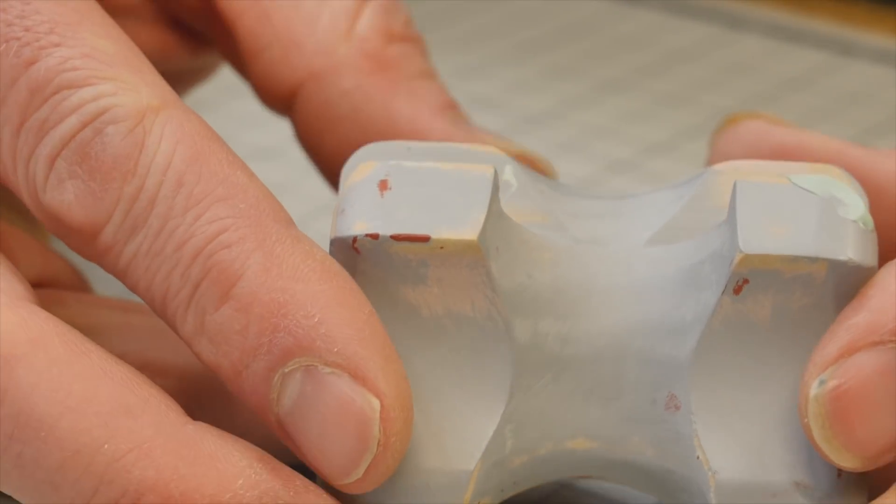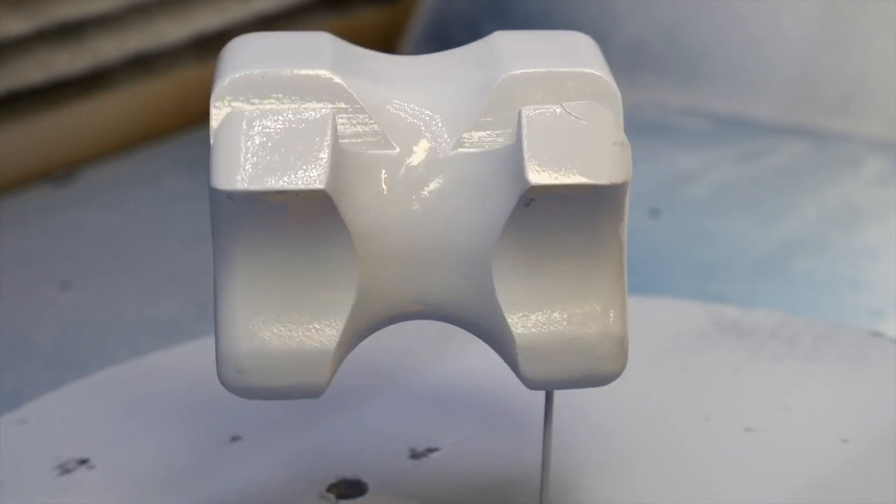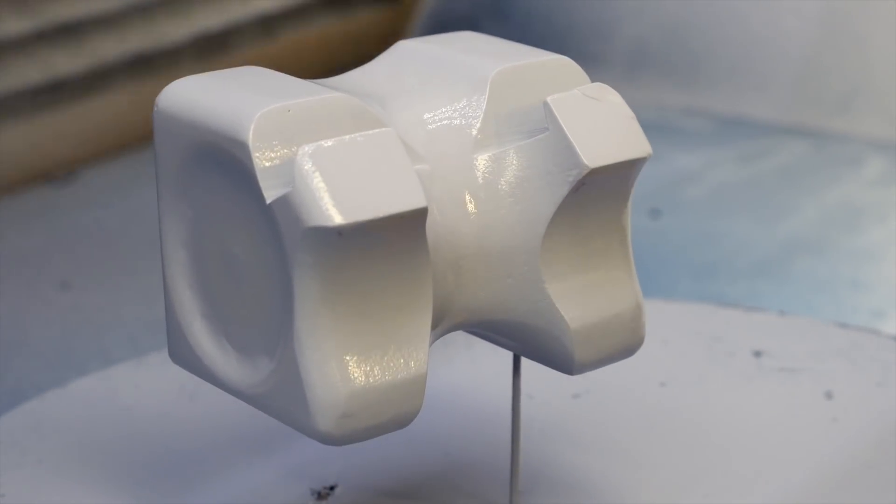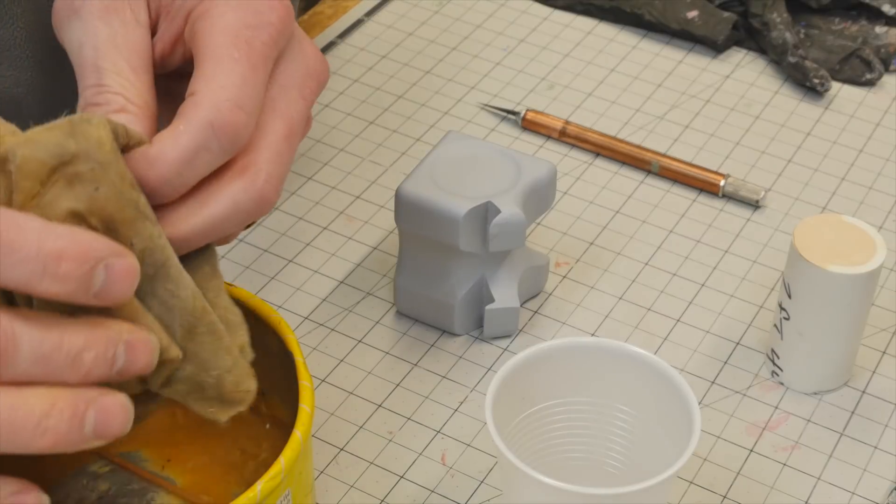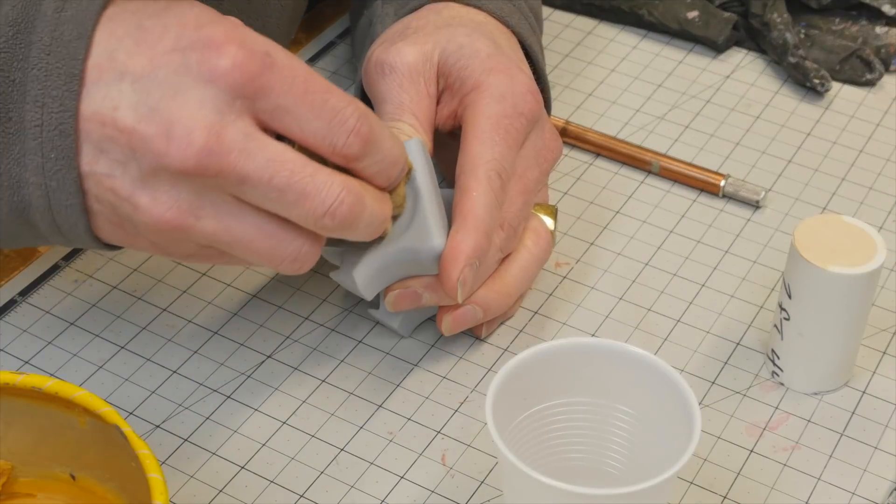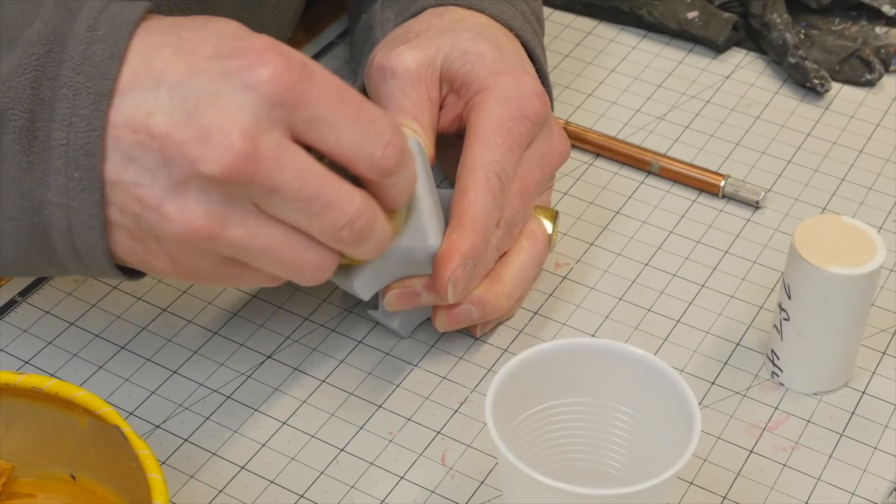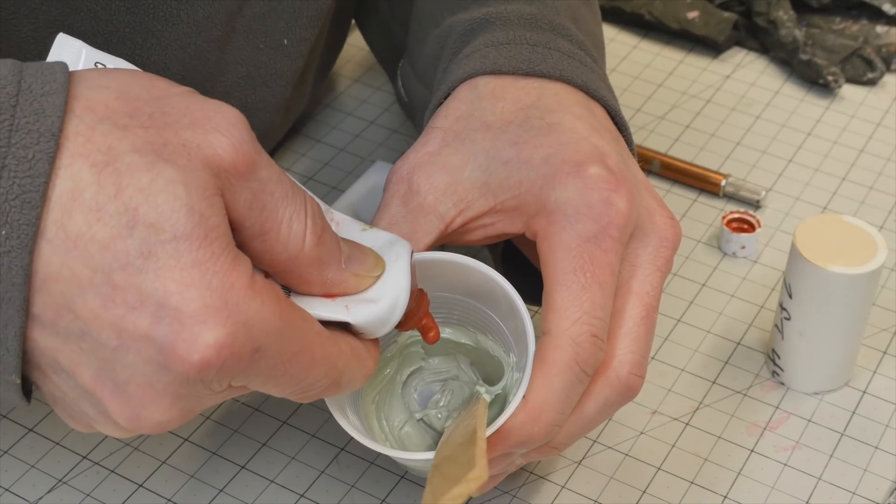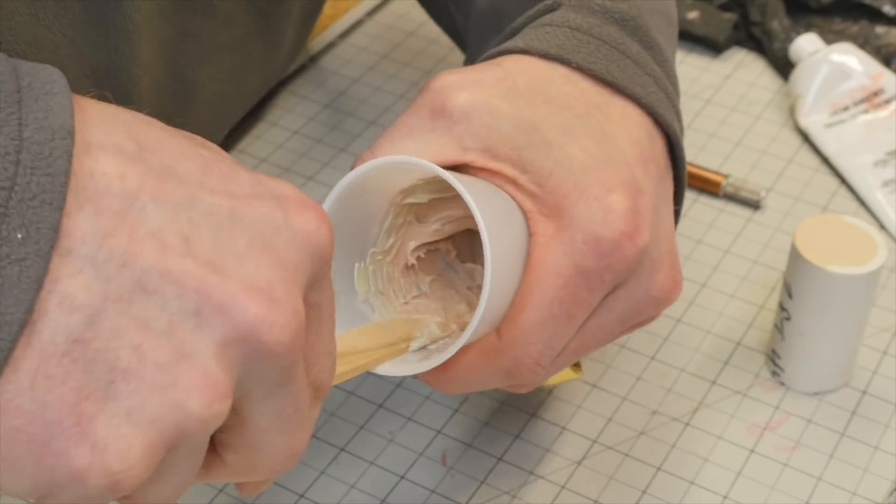When you're spraying your primer, you're laying down thin light coats. You're trying to build up the primer. Not too heavy. You're only pressing the button as you approach the object. You let it go as you exit. You're not pressing the button the entire time like a cartoon character. Don't be an amateur.